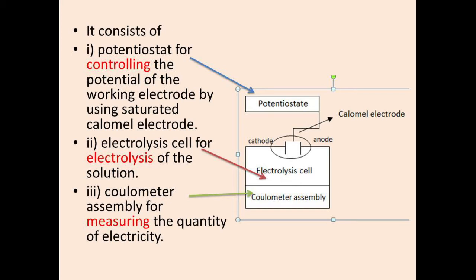The Potentiostat is used for controlling the potential of the working electrode — that is the anode — by using a standard calomel electrode. The second component is the Electrolysis Cell, which is used for the electrolysis of the solution containing the anode.